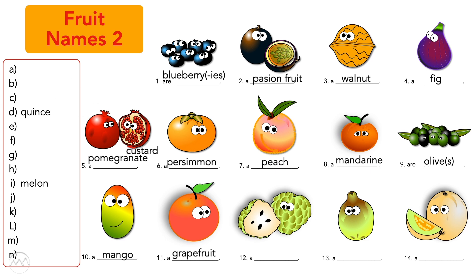Number twelve — Correct! This is a custard apple. This is a custard apple. Number thirteen — This is a quince. This is a quince.